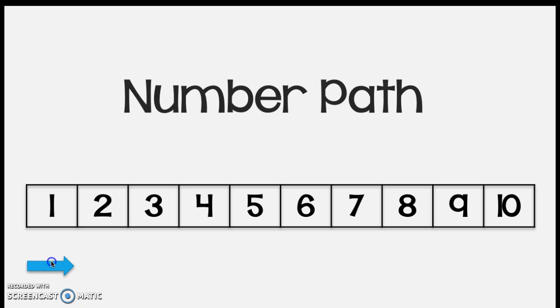You start at one and then you count up as you walk down the path. You say one, two, three, four, five, six, seven, eight, nine, ten. You see how it goes in order?